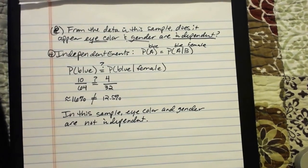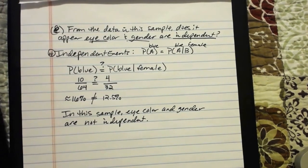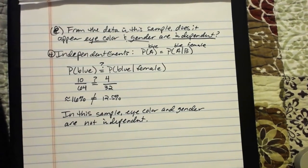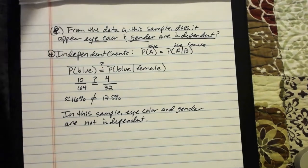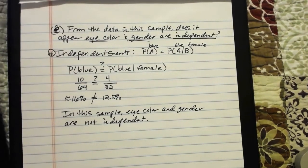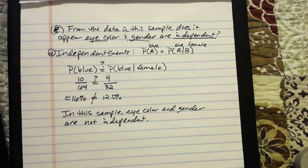That covers all of our probability rules. In the next video, we'll be taking a look at different ways to come up with a total number of possible outcomes when it's not immediately obvious.